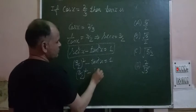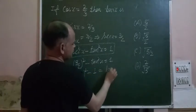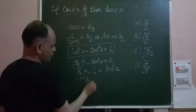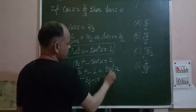So 3 by 2 squared minus 1 equals tan²x. Okay, so this is 9 over 4 minus 1 equals tan²x.